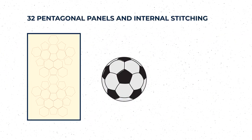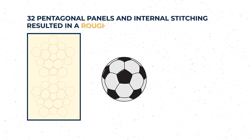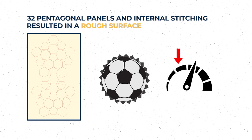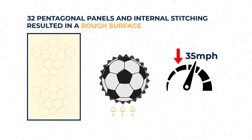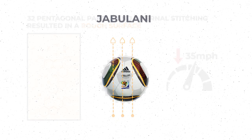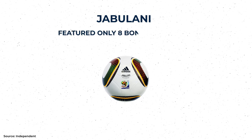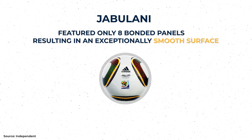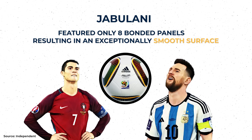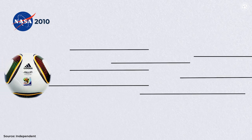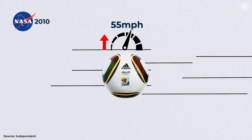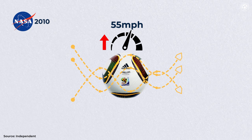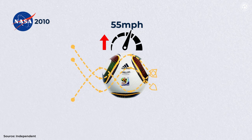Traditionally designed footballs, with their 32 pentagonal panels and internal stitching which resulted in a rough surface, had a relatively low critical transition speed of approximately 35 miles per hour. In other words, the airflow around these balls remained relatively stable at speeds below this threshold. The Jabulani, the ball that introduced the concept of fewer panels, featured only eight bonded panels, resulting in an exceptionally smooth surface. However, it presented a unique challenge that became known as the Jabulani effect. According to NASA's studies conducted in 2010, the critical transition speed of the Jabulani was much higher, estimated to be around 55 miles per hour.